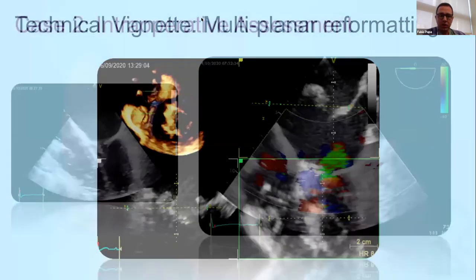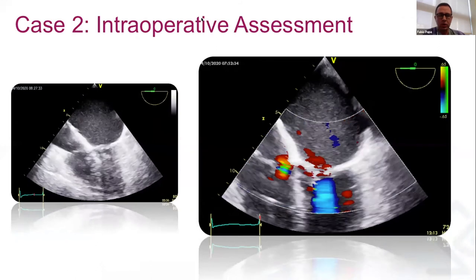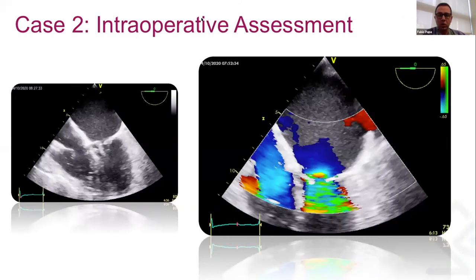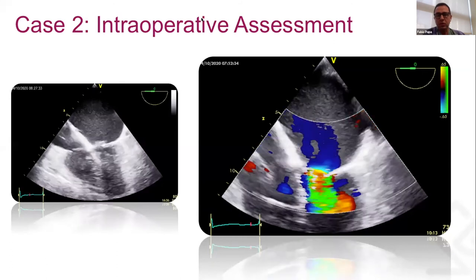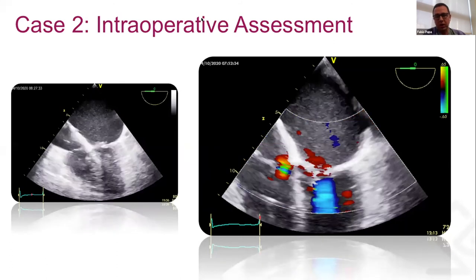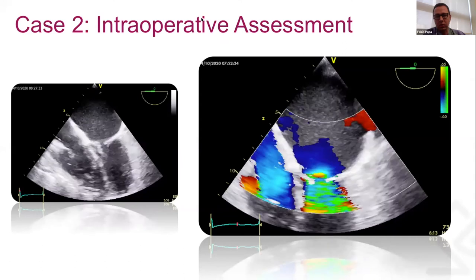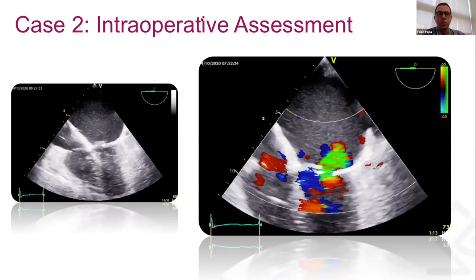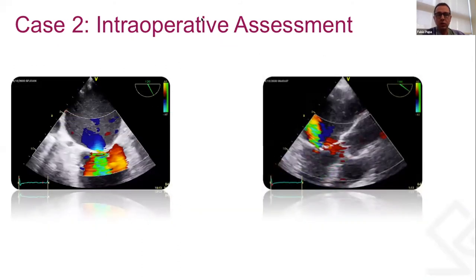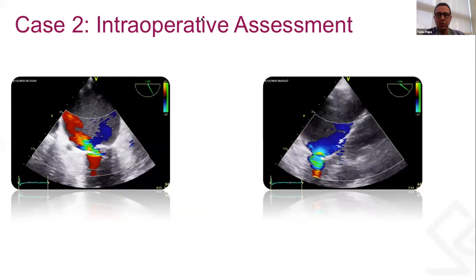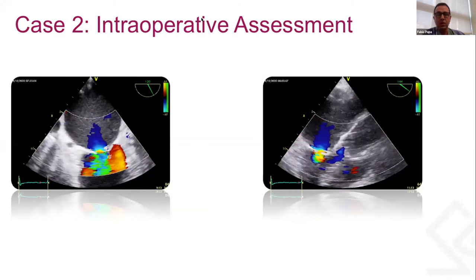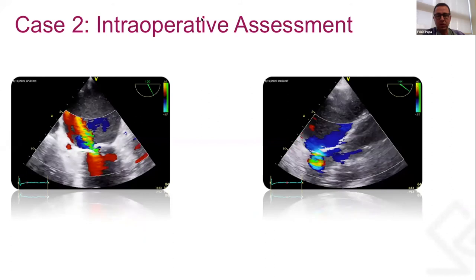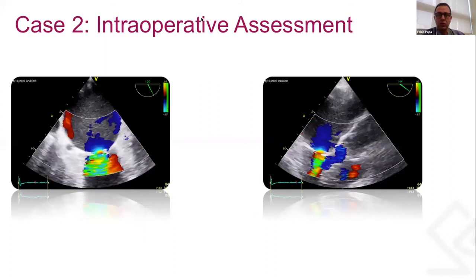Going back to our patient, continuing with the mitral valve assessment and applying color Doppler, we can see really severe mitral stenosis — evident from the flow acceleration in diastole. But we can also see that this patient has some mitral regurgitation as well. This patient has a mixed valve lesion with both severe mitral stenosis and some degree of mitral regurgitation.